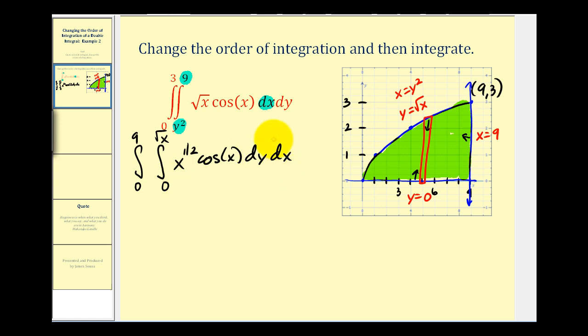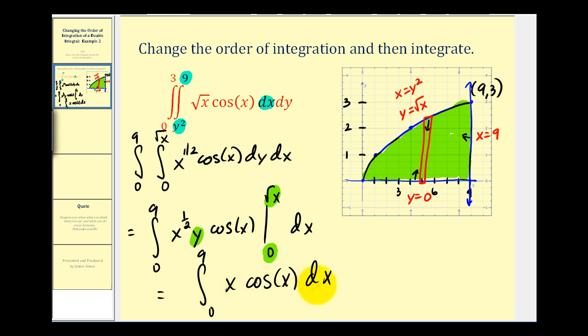Now let's see if we can evaluate this double integral. So the nice thing about this now is when you're going to integrate with respect to y, this is a constant, so we're going to have x to the one-half, y, cosine x. So that was a much easier anti-derivative to determine. And now because we integrate with respect to y, we're going to replace y with the square root of x and zero. So we replace y with the square root of x, we're going to have x cosine x. And then when y is zero, this will be zero. So let's go ahead and finish this on the next slide.